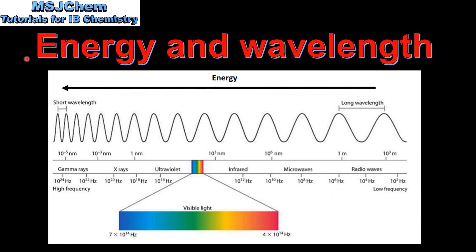Next we will have a quick review of the relationship between energy and wavelength. Here we have the electromagnetic spectrum. Energy increases from right to left and wavelength decreases from right to left. So higher energy means shorter wavelength, and lower energy means longer wavelength.